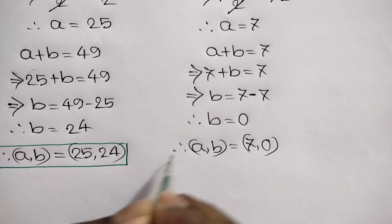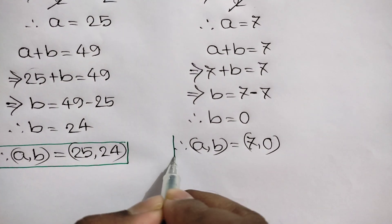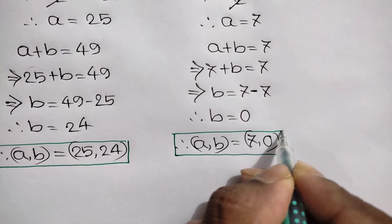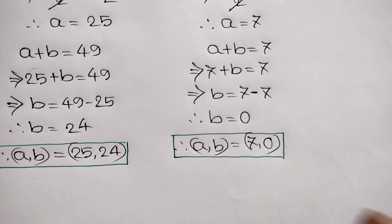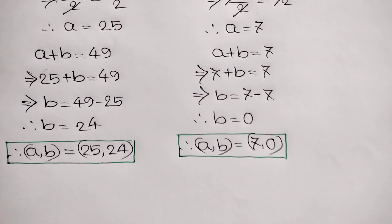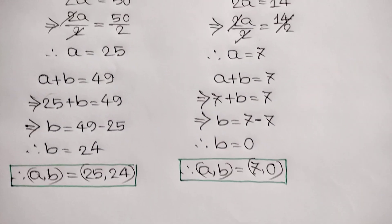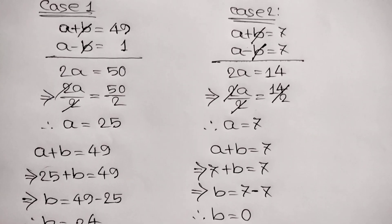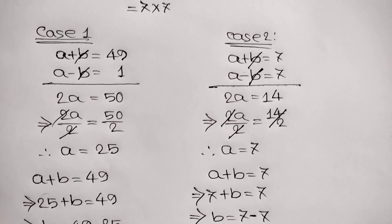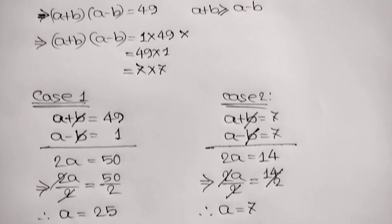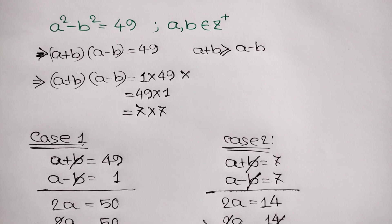So there are two values of a and b: 25 comma 24, and 7 comma 0. This is our final answer. Thanks for watching — if you like this video, please subscribe to my channel. See you in the next video, bye bye.